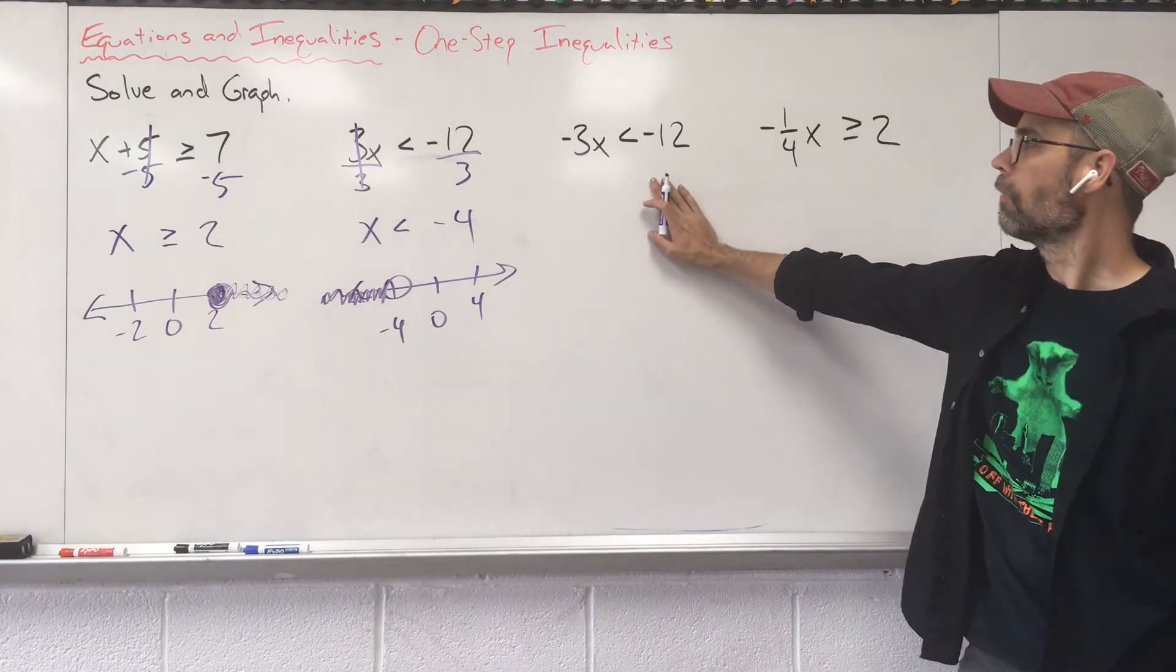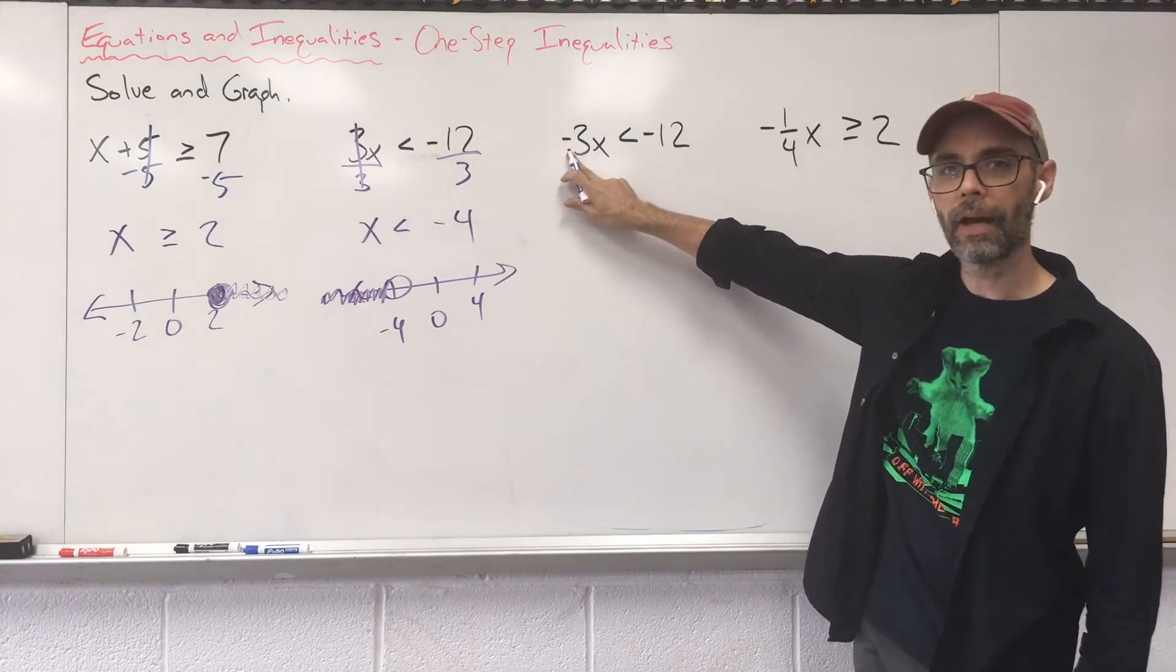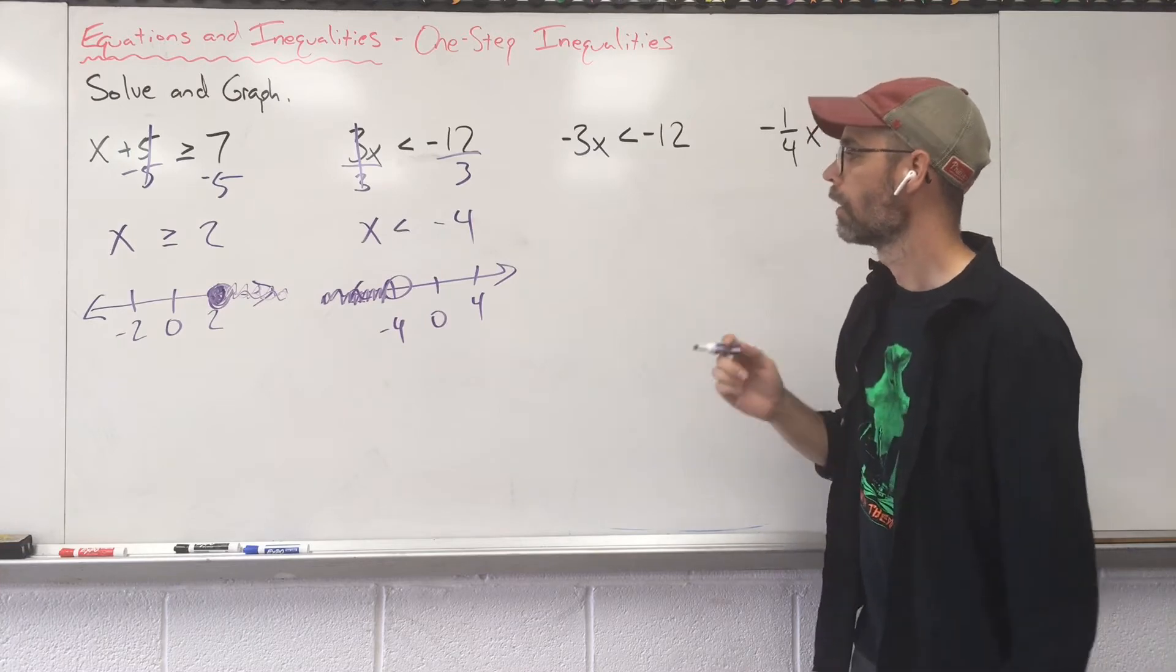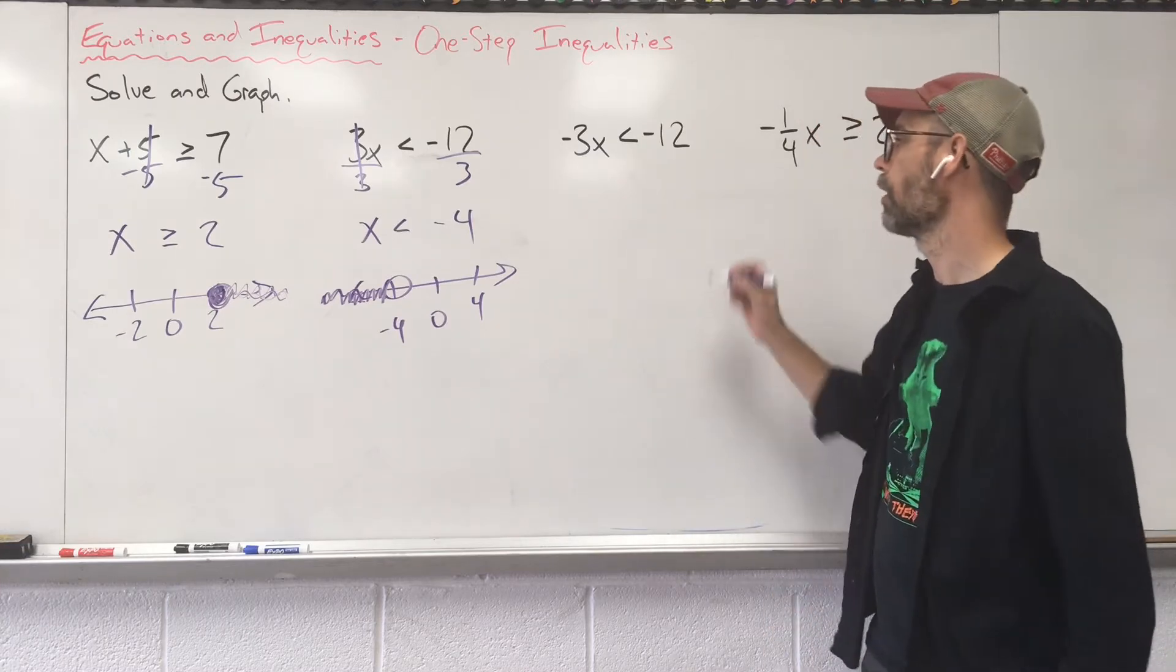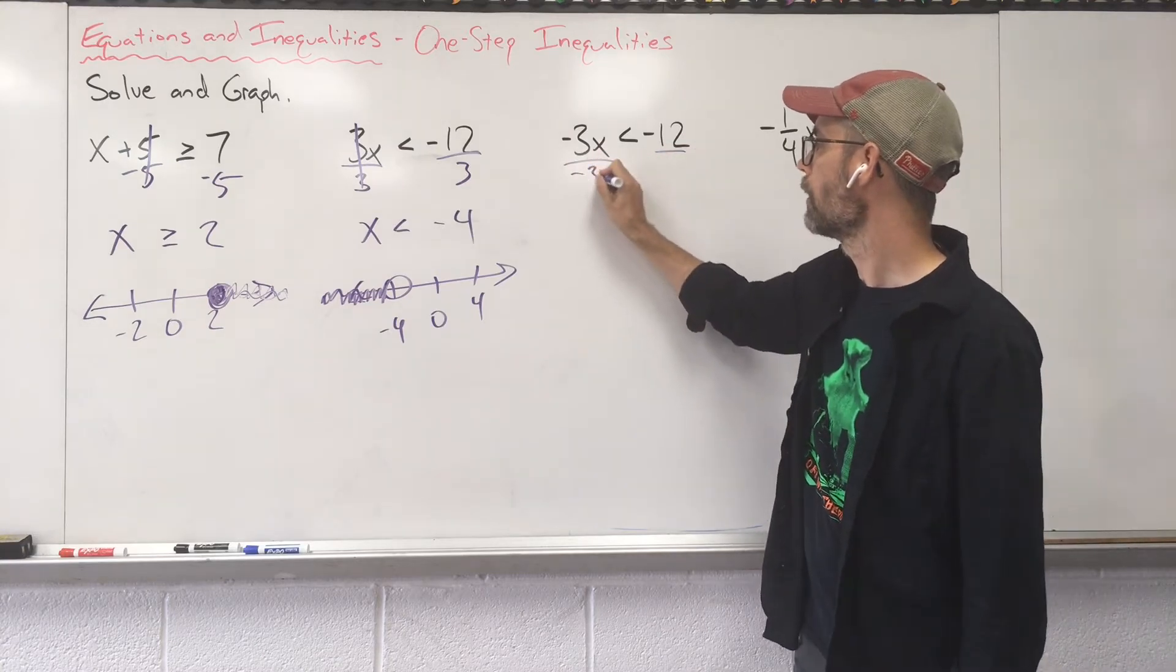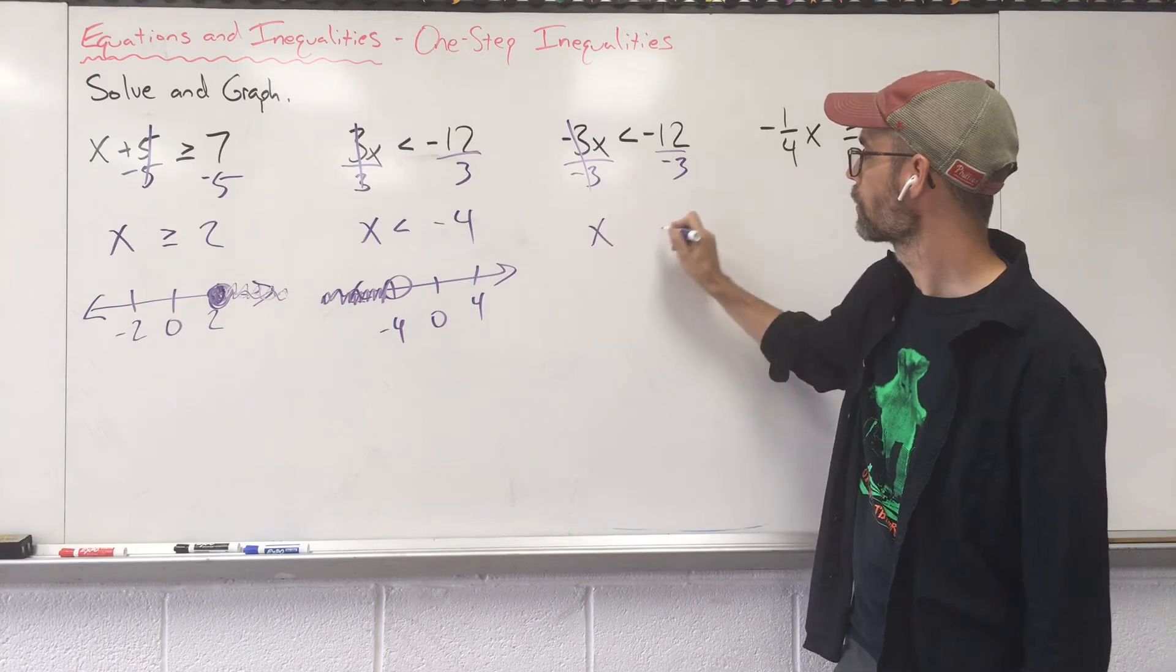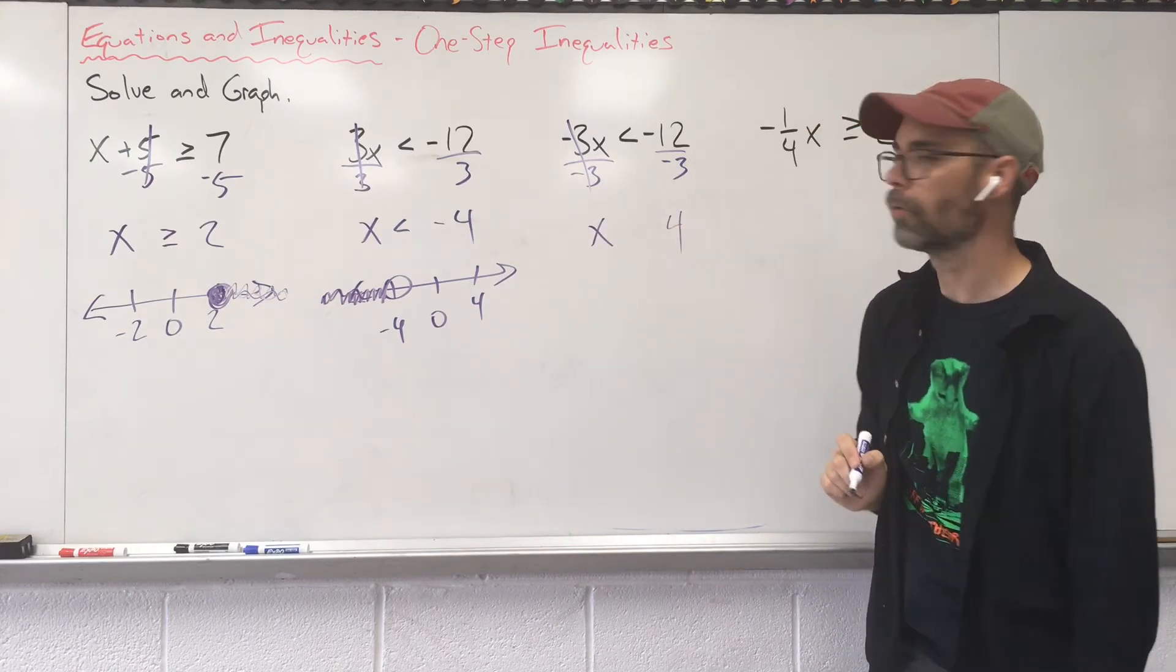Now, I have a problem that's very similar. The only difference is that negative out in front. And something huge is going to happen here. Let's start this off the same way we started all the other ones. Let's divide. Those threes cancel, x. And now we're left with positive 4.